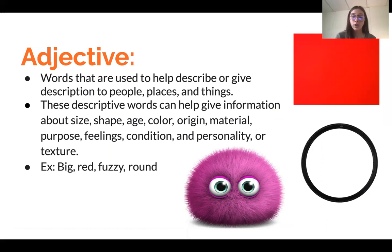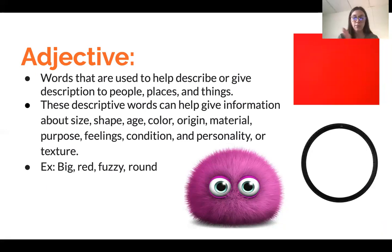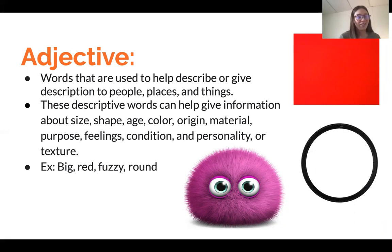Basically, it's a word that's describing the noun. Examples: we have big, red, fuzzy, and brown — all of these can be used to describe a noun. So you could say 'the big picture' — big is describing picture. You can also say 'the red picture.' Fuzzy picture, round picture. Some of them don't really make sense; you can't really have a fuzzy picture, but you get the gist. It's describing a noun, which is the picture in that case.